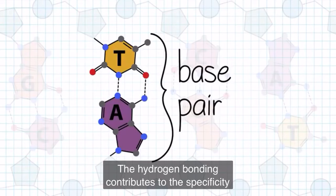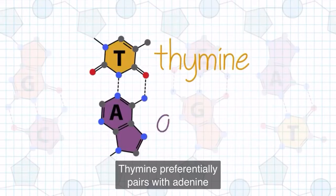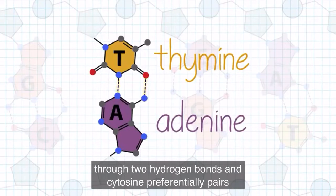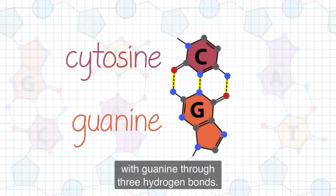The hydrogen bonding contributes to the specificity of base pairing. Thymine preferentially pairs with adenine through two hydrogen bonds, and cytosine preferentially pairs with guanine through three hydrogen bonds.